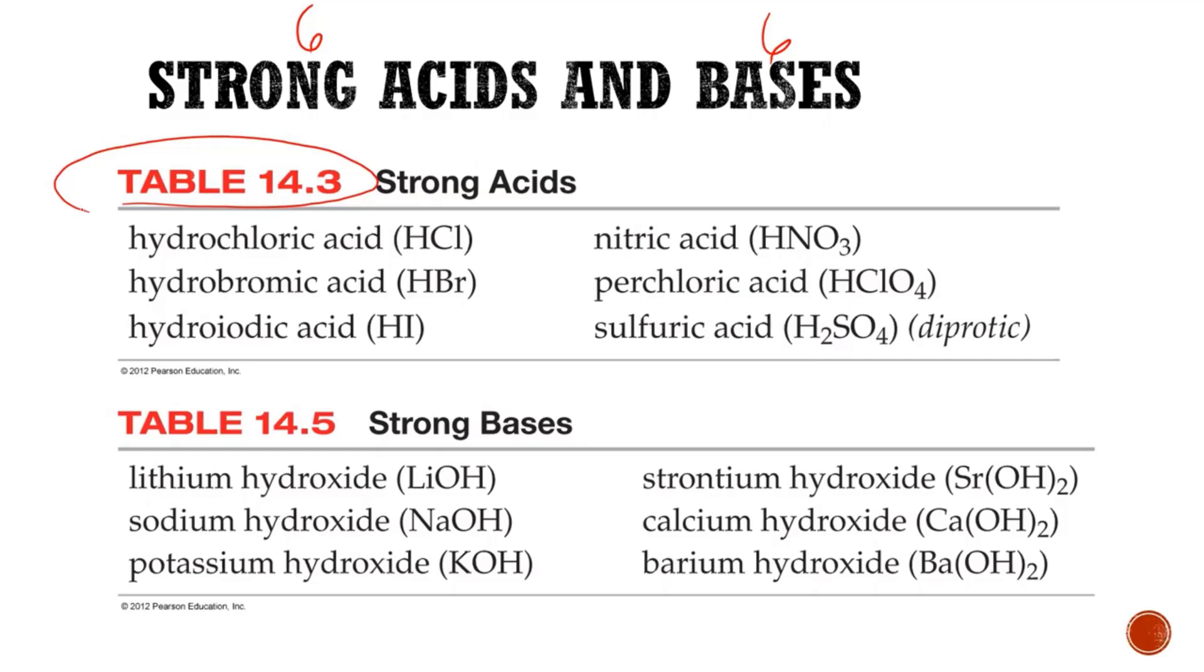So the six strong acids that I want you to know are, three of them are binary, hydrochloric, hydrobromic, and hydroiodic. The other three are oxyacids, nitric, sulfuric. But the reason why I reviewed all the different oxyanions, if you remember,